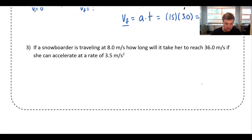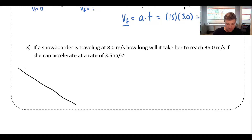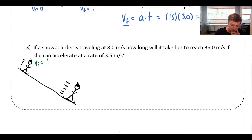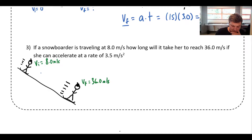Last example: a snowboarder traveling at 8 meters per second — how long will it take to reach 36 meters per second if she accelerates at 3.5 meters per second squared? Drawing a snowboarder already moving, then zooming down the hill going faster. The initial velocity is 8 m/s, the final velocity is 36 m/s, and the acceleration is 3.5 m/s² in the direction of motion. This time I'm looking for time.